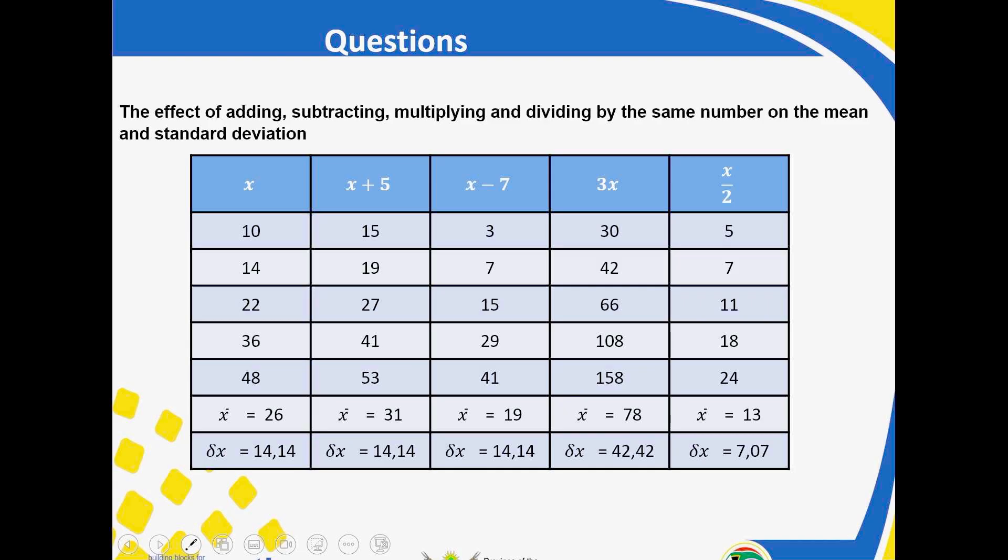But let's look at what happens when you multiply. You see, when you are multiplying, you see that your mean, you multiply it by 3. Your standard deviation is also being multiplied by 3. When you divide by 2, you will see that your mean is subtracted by, divided by 2. Then, your standard deviation is divided by 2. You can see that.